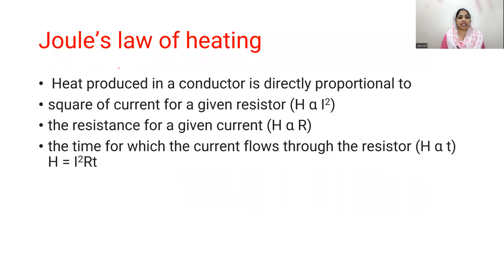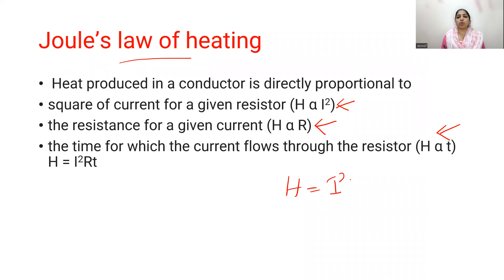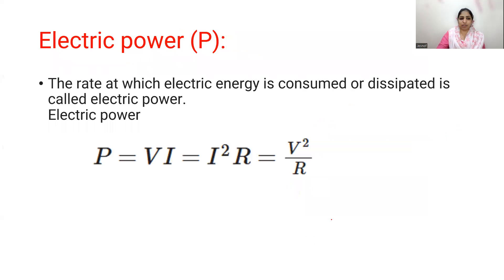Joule's Law of Heating: the heat produced in a conductor is directly proportional to the square of the current, directly proportional to the resistance of the conductor, and directly proportional to time. Combining these, H is equal to I squared R T. The SI unit of heat is Joule.